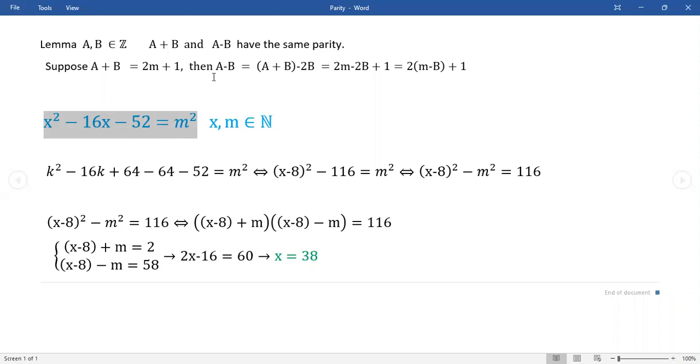Now something that's not particularly common I don't think like in college-level math classes is talking about parity. And parity just means even or odd. So the proposition here is that if A and B are any two integers, that's natural numbers and their negative counterparts and zero, they have the same parity. That is, if A plus B is odd, then A minus B would be odd. If A plus B is even, then A minus B would be even.